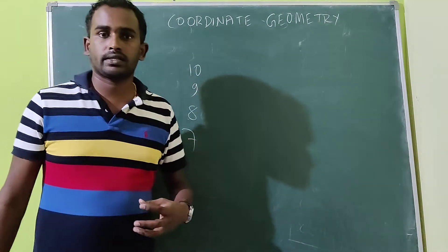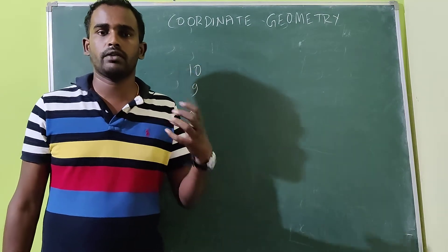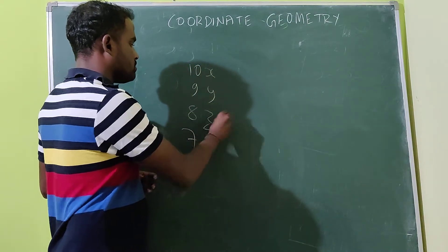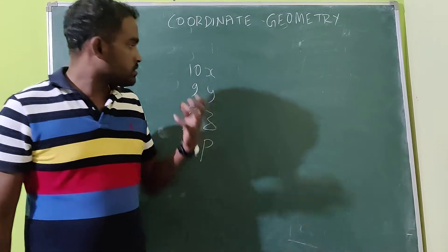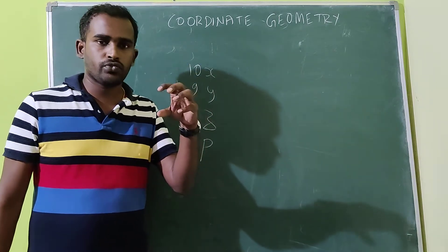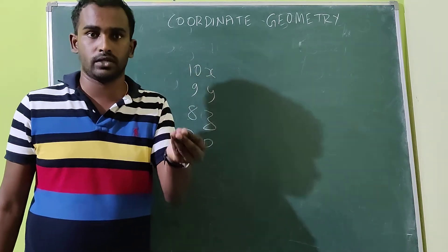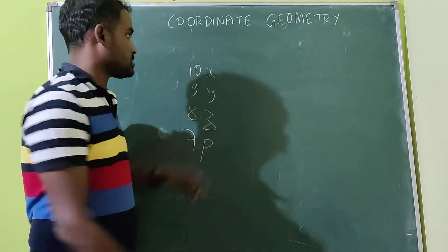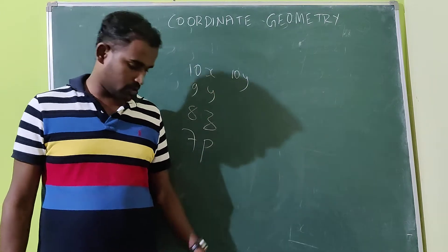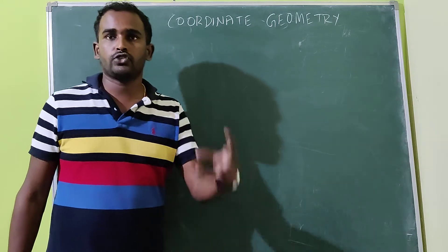Next is algebra. Algebra means it is a branch of mathematics where we can deal with both numbers as well as variables. This is the algebraic part — it consists of both numbers as well as letters. Letters mean variables — you can change them. For example, one child writes x, another child can write y. This is the algebraic part.